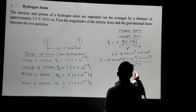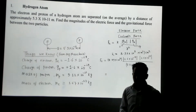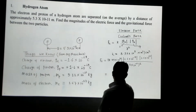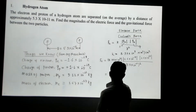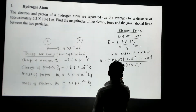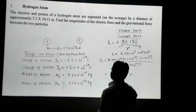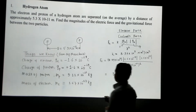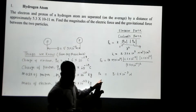Once you plug in all the numbers and do all the math, the answer you get is 8.2×10⁻⁹ newtons. So this is the electrical force between the electron and proton.